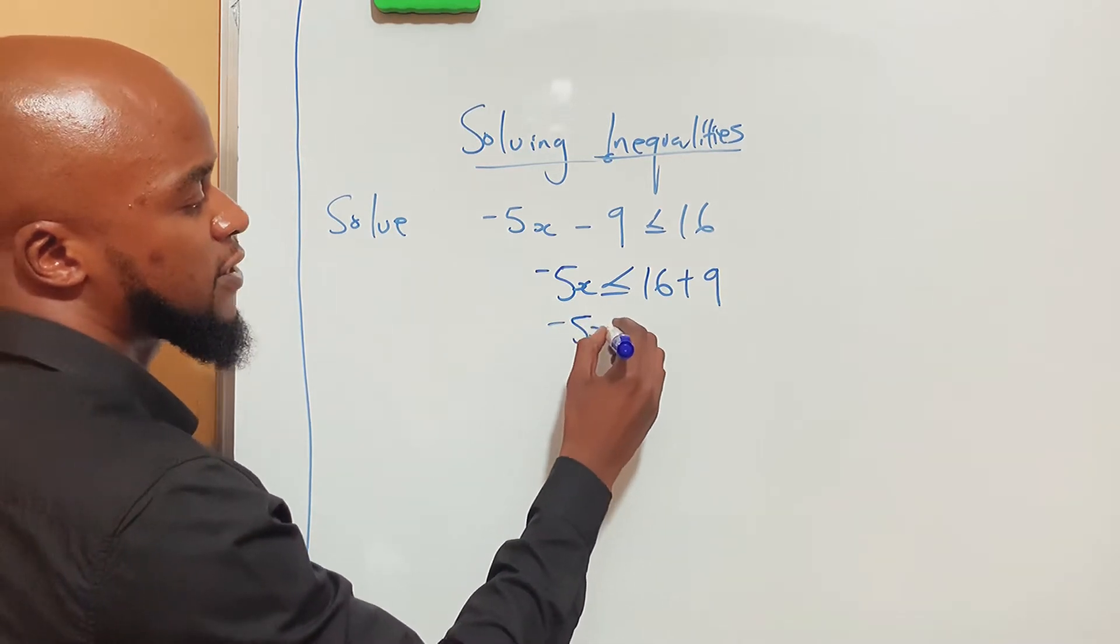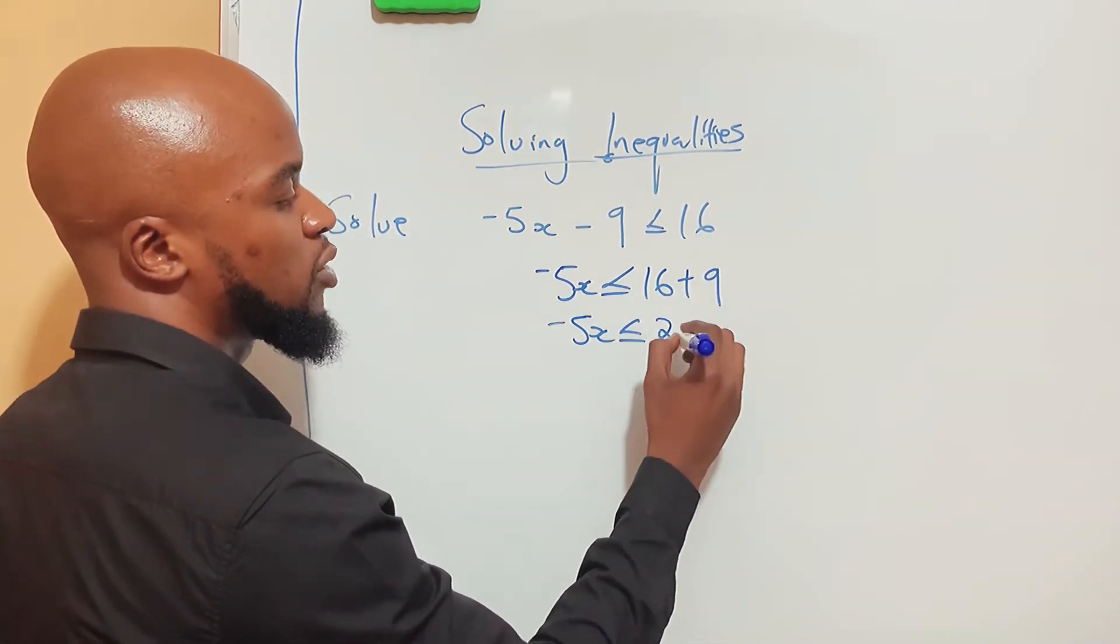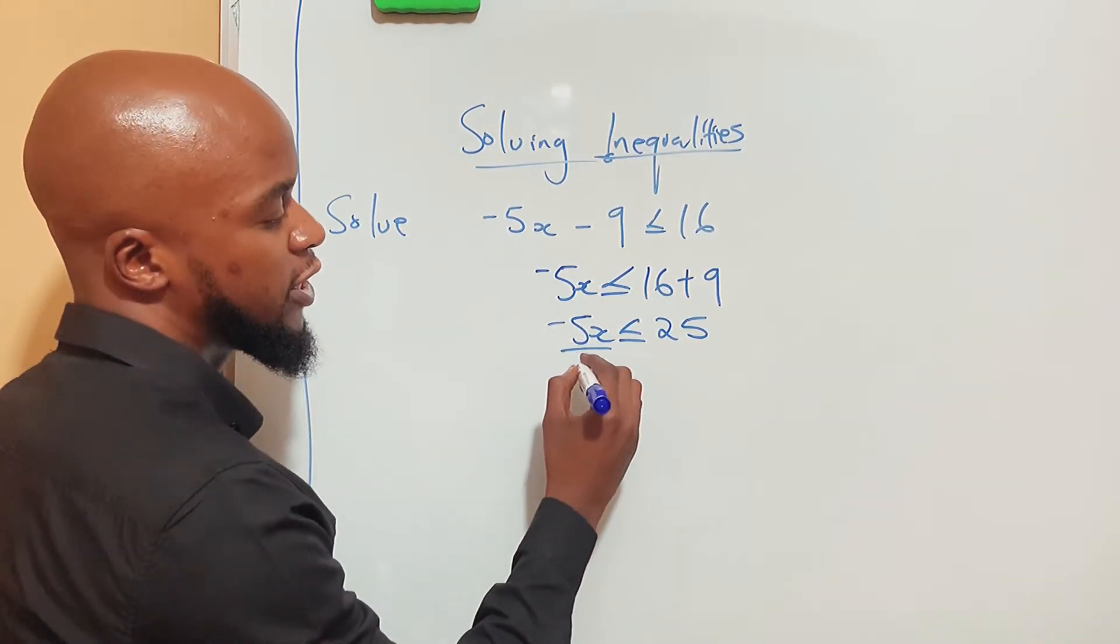So here you have -5x ≤ 16 + 9, which is 25. You want to find x. What do you divide by? Negative 5.